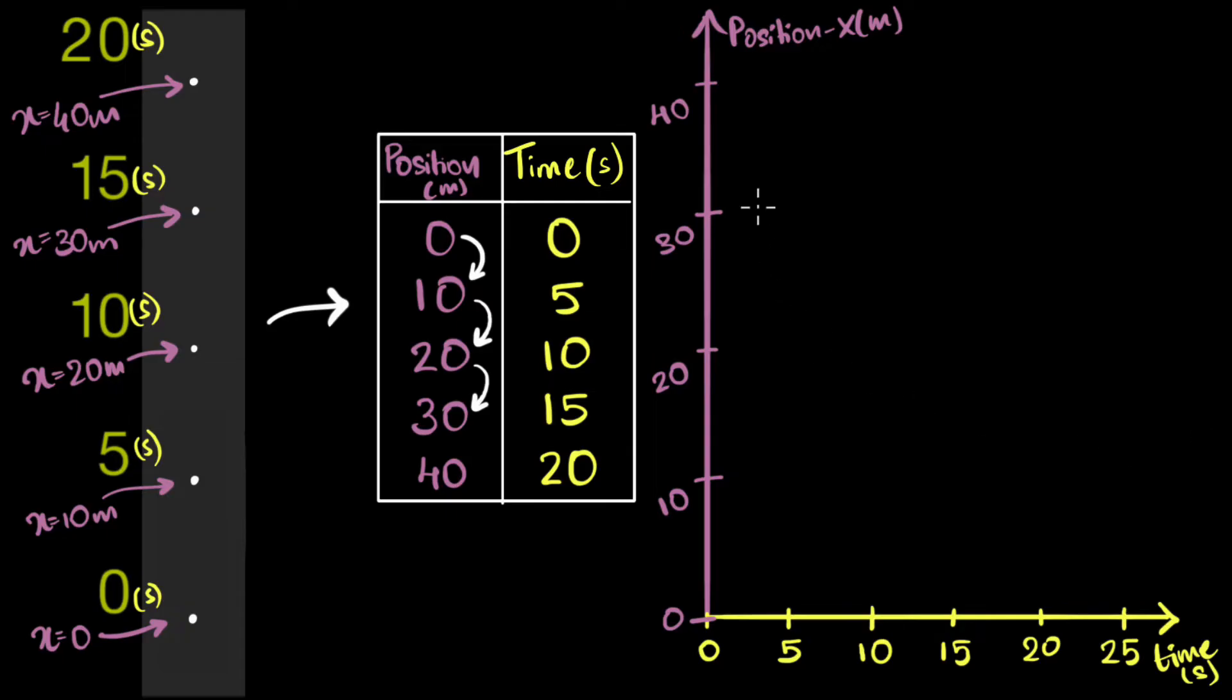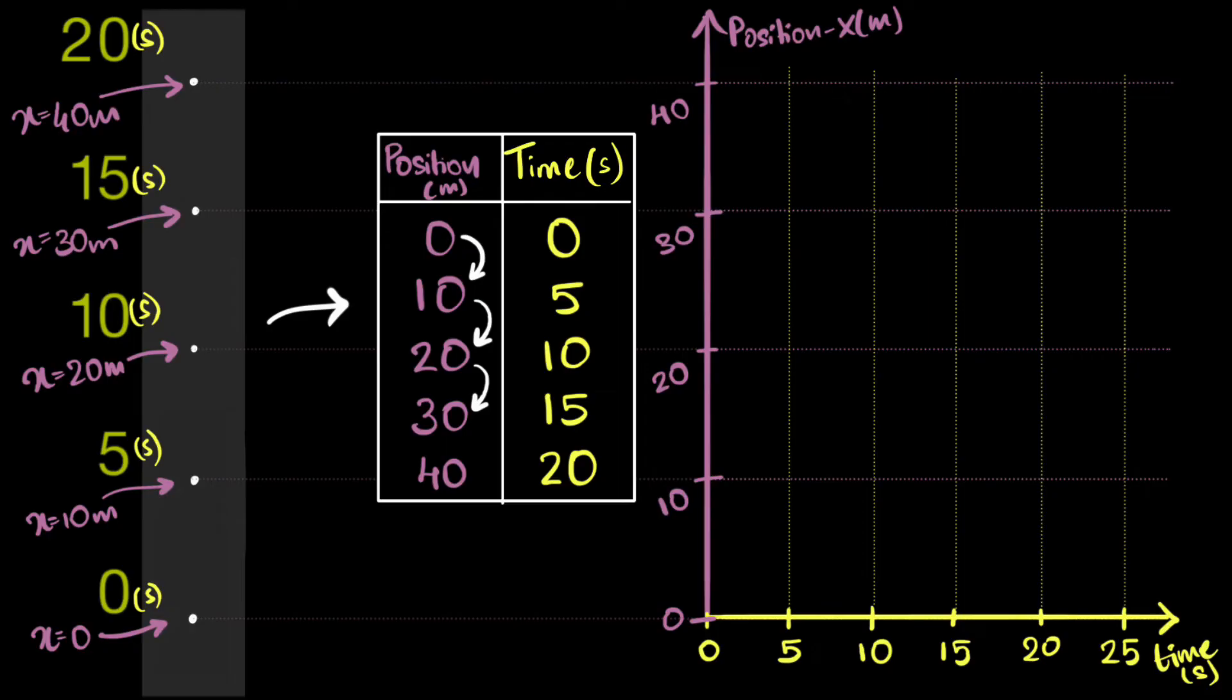All right, let's do this. Now, ideally, you need a graph paper to have very accurate markings. But since I don't have it, I'm gonna draw a few reference lines for myself. Cool. Now, at zero time, our position is zero. So that's zero, zero, that's over here. At five seconds, our position is at 10 meters. So we draw here. 10 seconds, we are at 20. 15 seconds, we are at 30. And at 20 seconds, we are at 40.